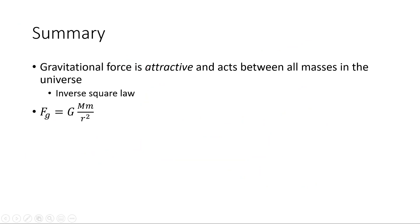In summary, the gravitational force is universal — it's an attractive force between all masses in the universe. It is an inverse square law, which means if you double the distance, the force goes down by the distance squared. The equation for the gravitational force between any two objects is: force of gravity equals G M m over r squared.